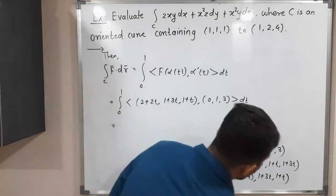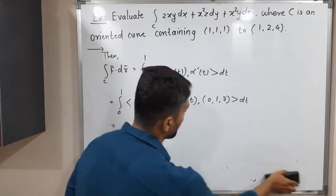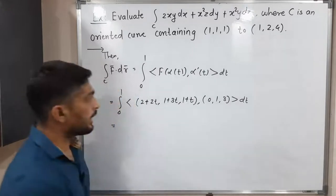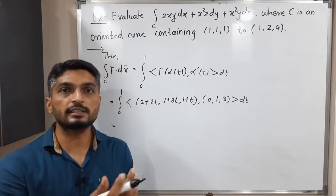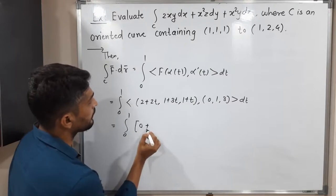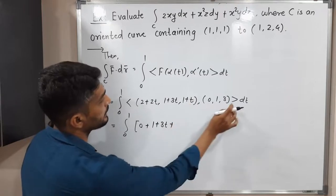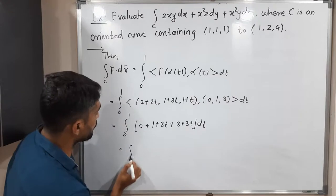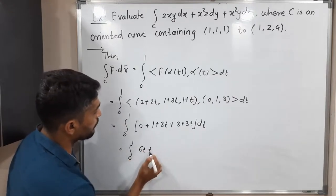So this is equal to—so see, these things are not required, so let me remove. So we will have some more space to solve this problem. So you know well how to find the value of inner product. First component into first component plus second into second plus third into third. So integration 0 to 1: 2+2t into 0, obviously 0; 1+3t into 1 is 1+3t; plus 1+t into 3 is 3+3t. Let us simplify. So 0 to 1: 3t plus 3t is 6t; 1 plus 3 is 4, dt.